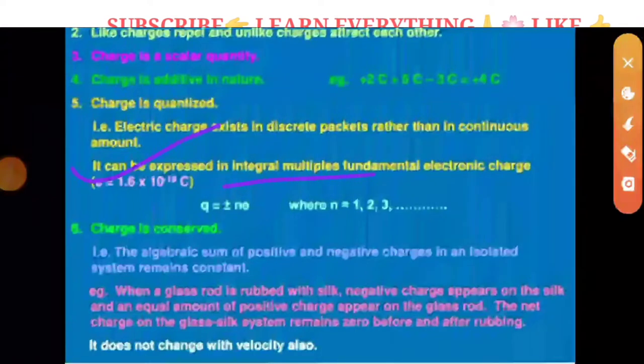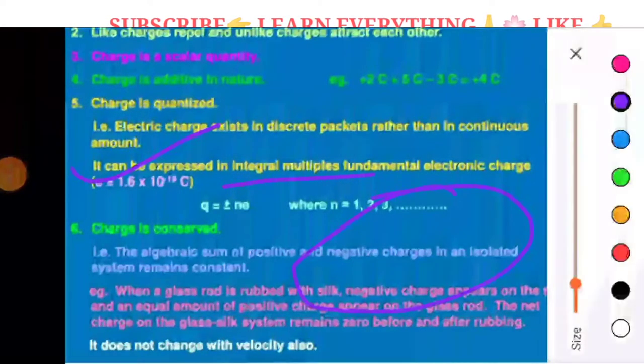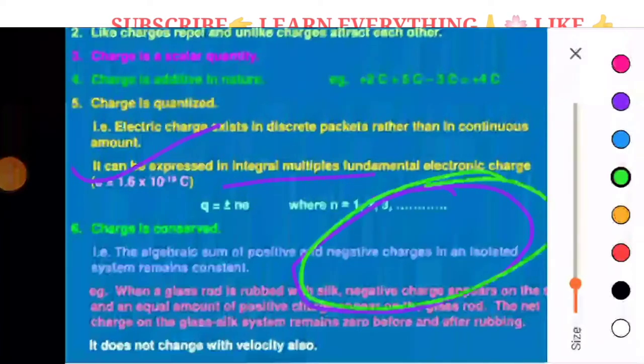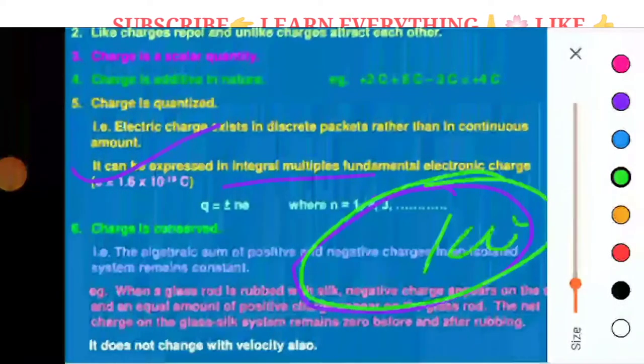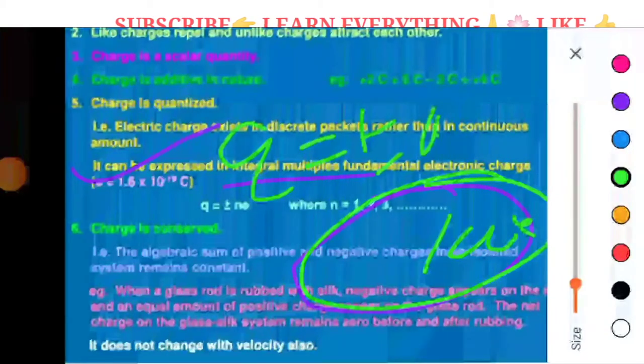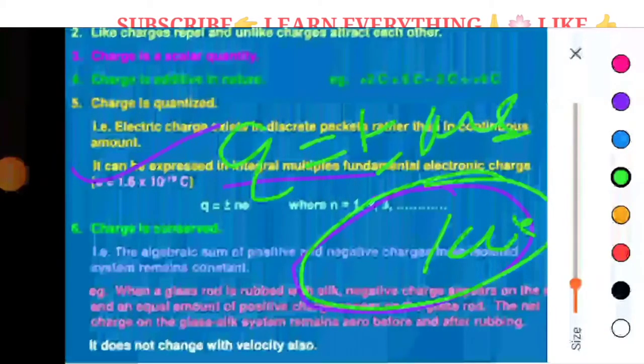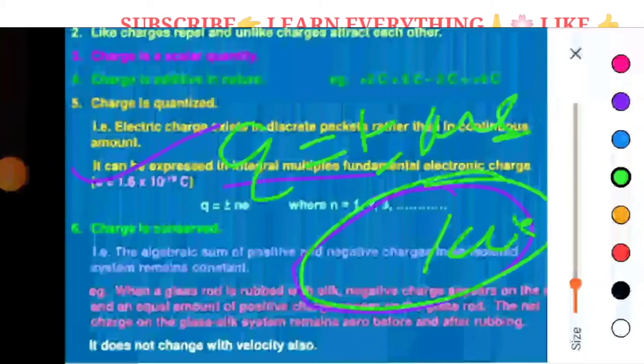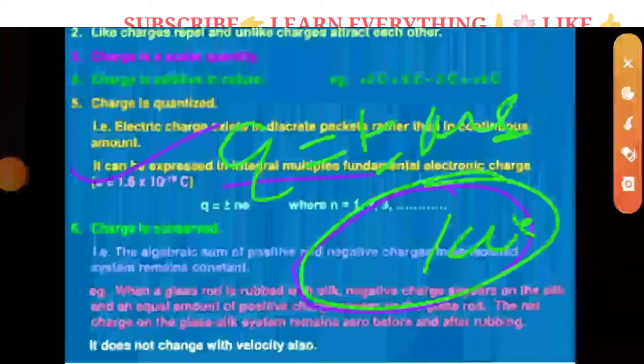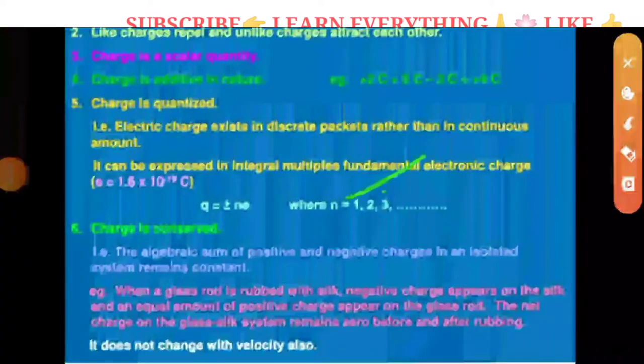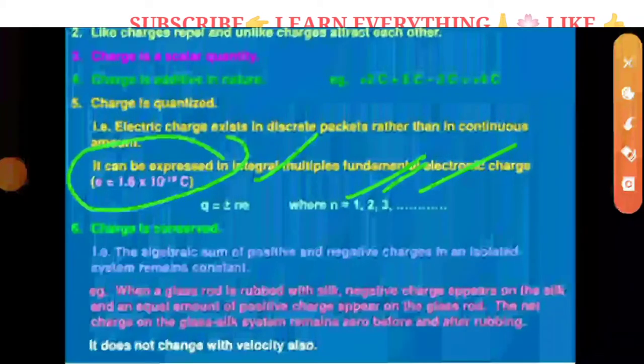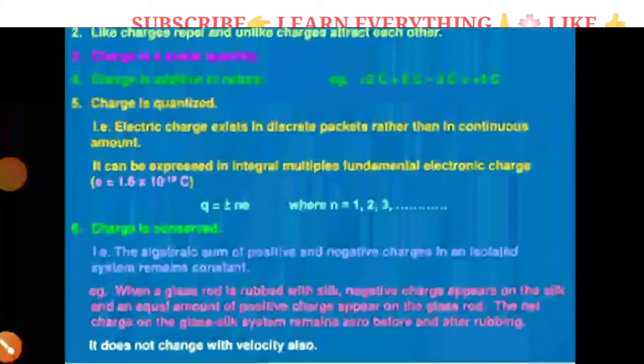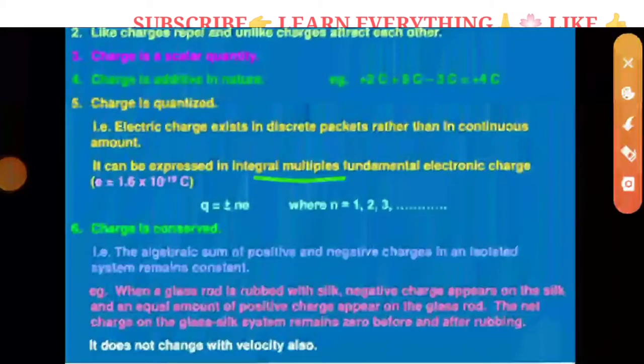It is quantized. The charge of a body depends on how many electrons or protons are transferred. If 100 electrons are transferred, the charge will be 100 times 1.6 into 10 to the minus 19 coulombs. So it can be expressed as an integral multiple of fundamental electronic charge. This is discrete packets rather than a continuous amount.